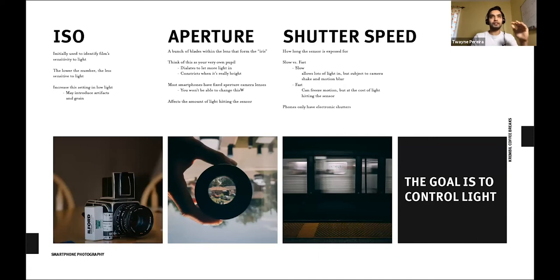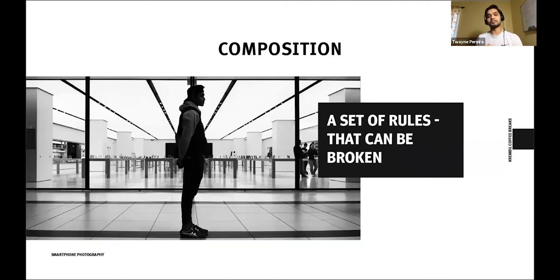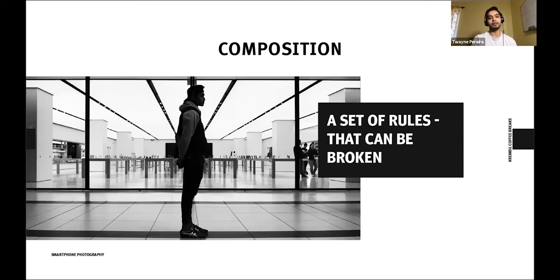Now that you understand how to expose a photo, the next thing is composition. These are a set of guides and rules — they can be broken, but we need to understand them first before breaking them and understand why we're breaking them when we do. This isn't an exhaustive list; I'll have tons of resources at the end with links to videos and podcasts that go into these rules in more depth.